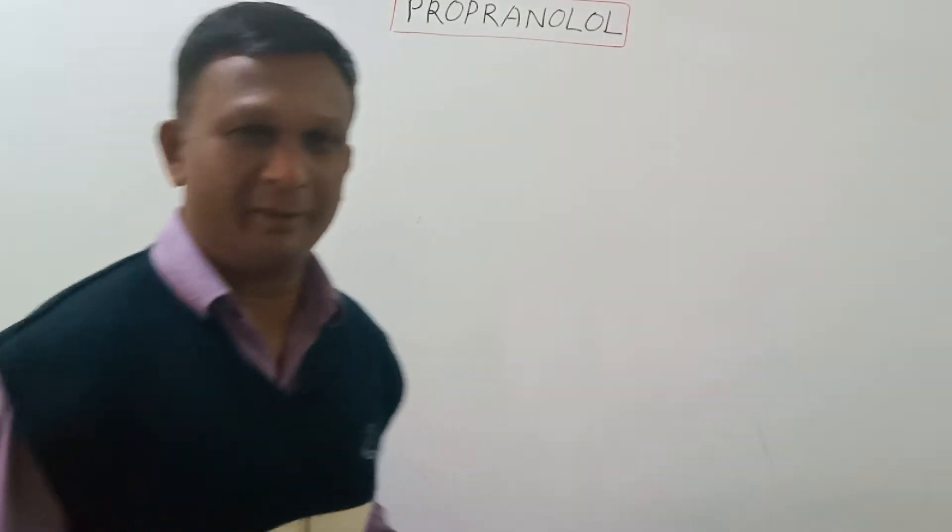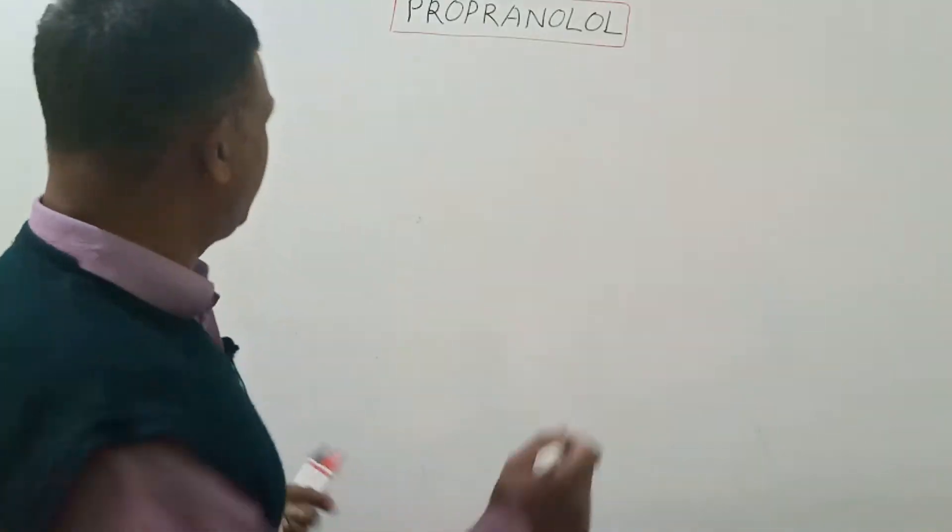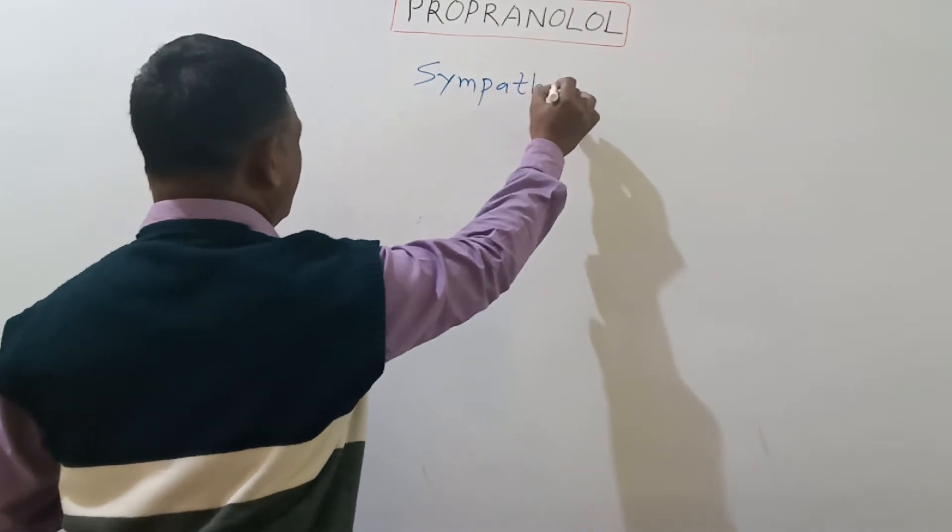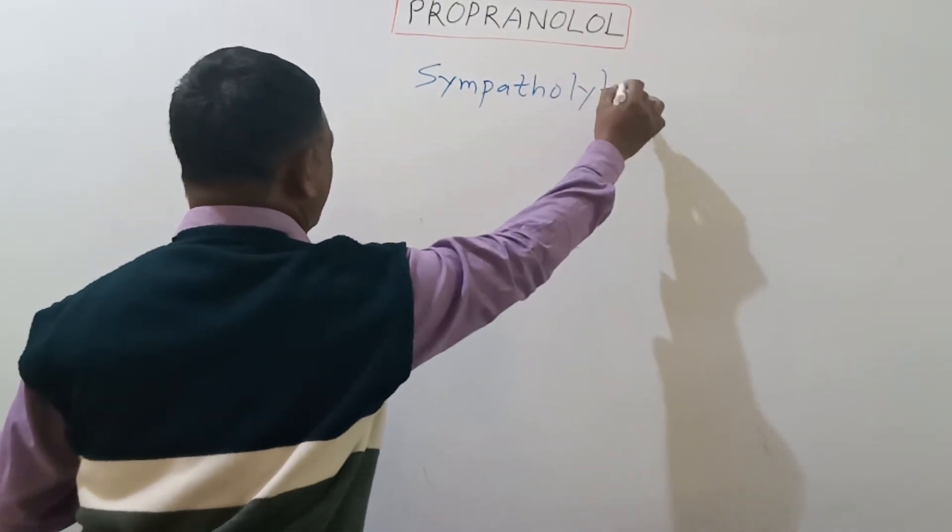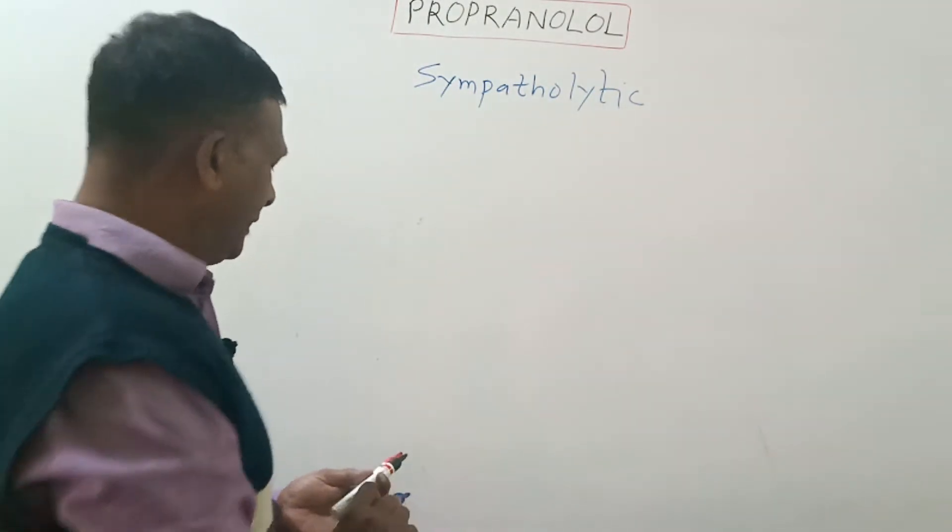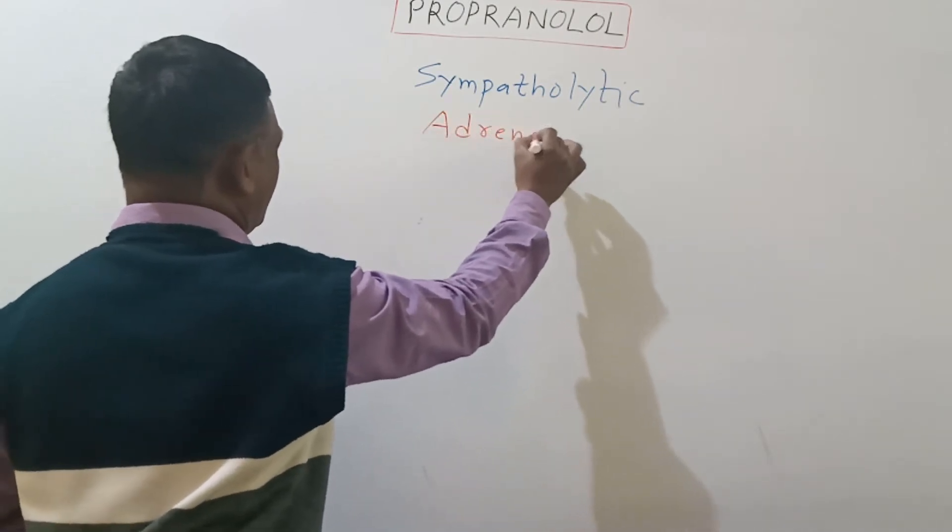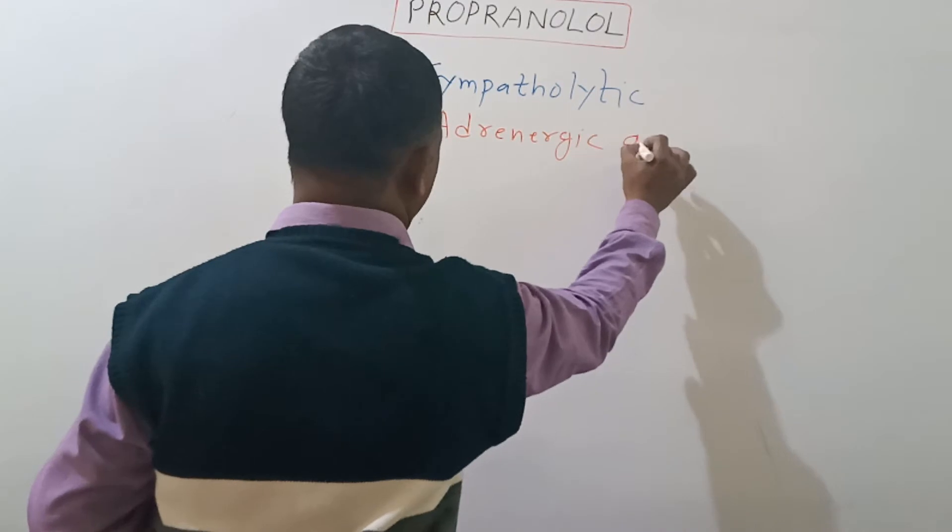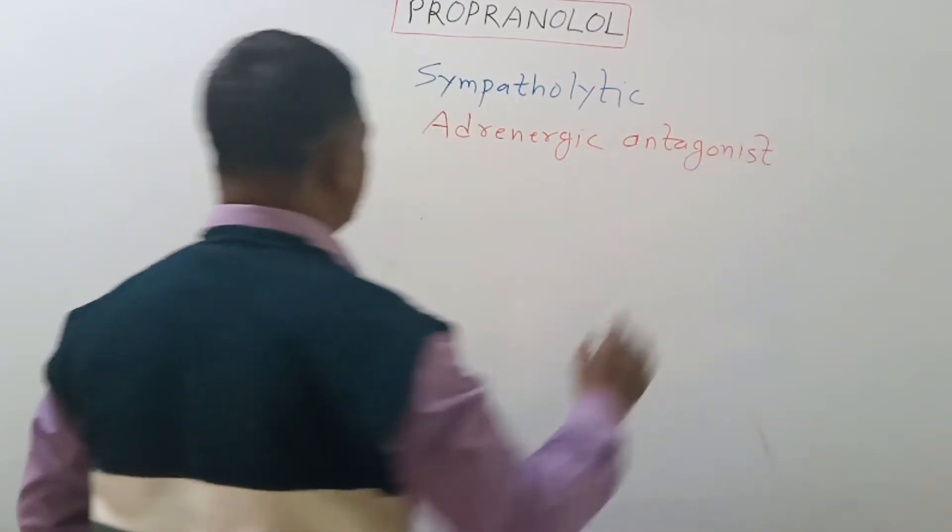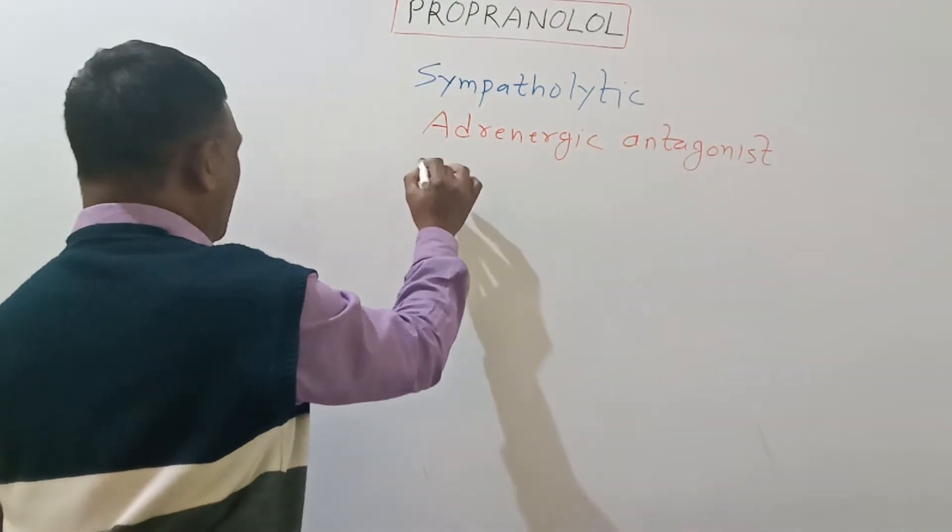Hello dear students, our today's topic is propranolol. This drug is considered a sympatholytic drug and it is also called adrenergic antagonist. This drug is a non-selective beta blocker.